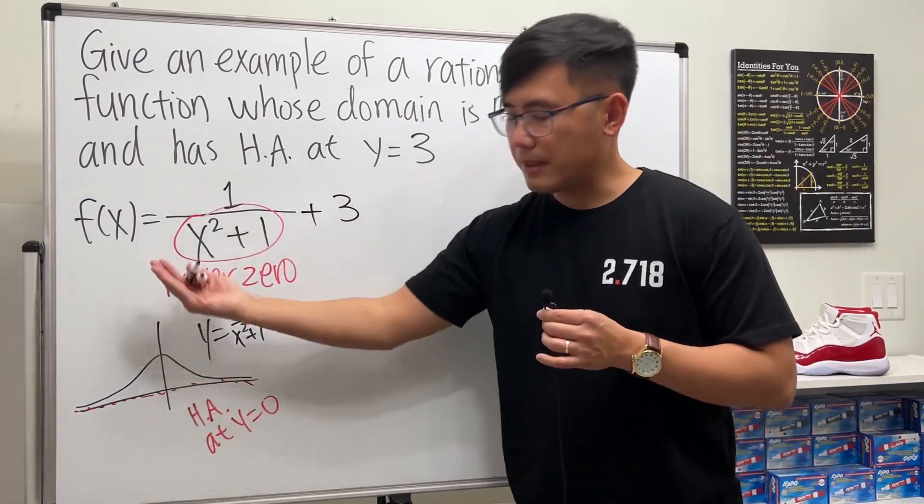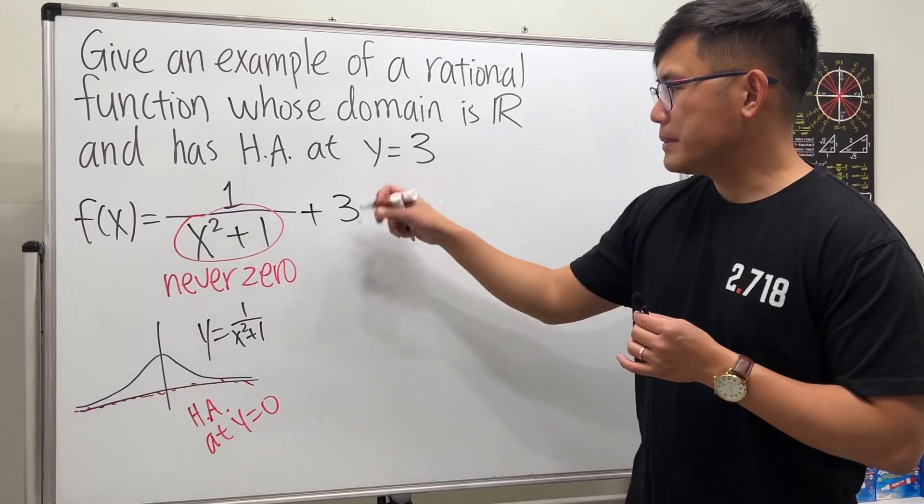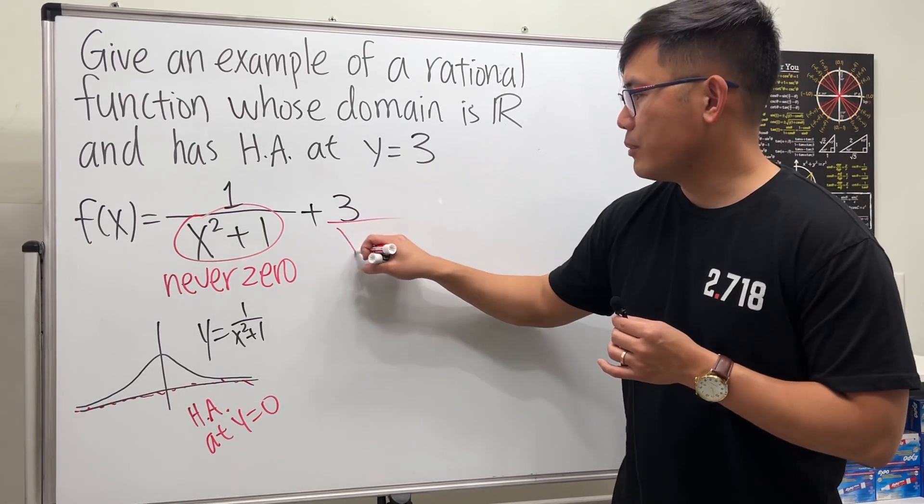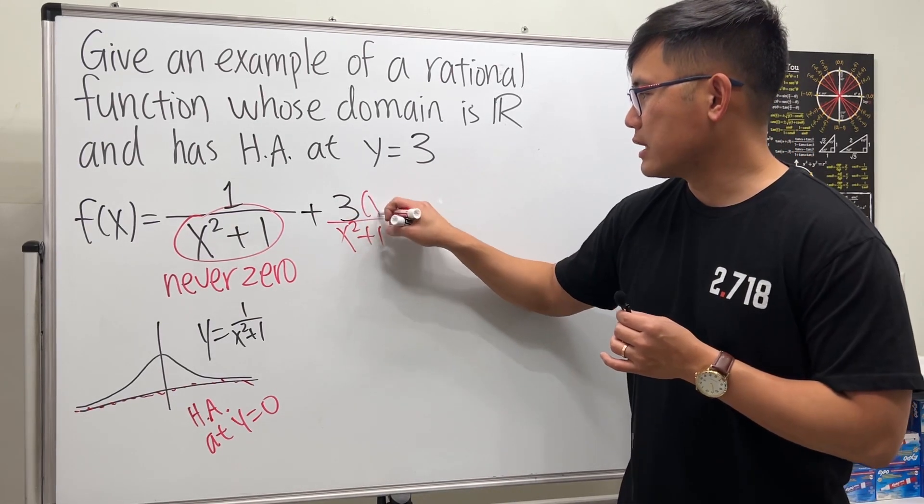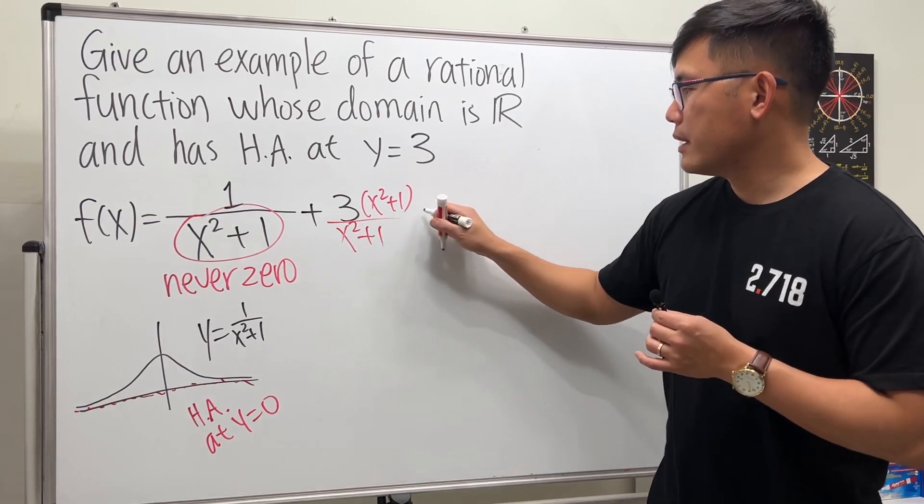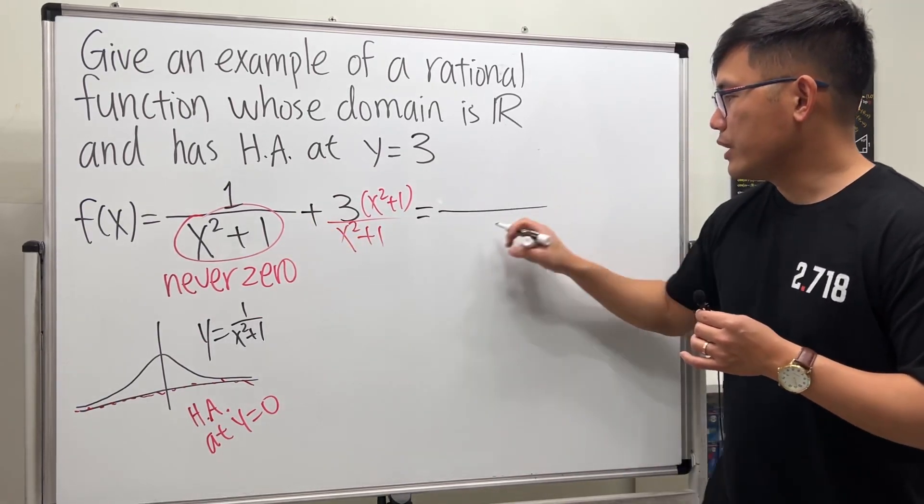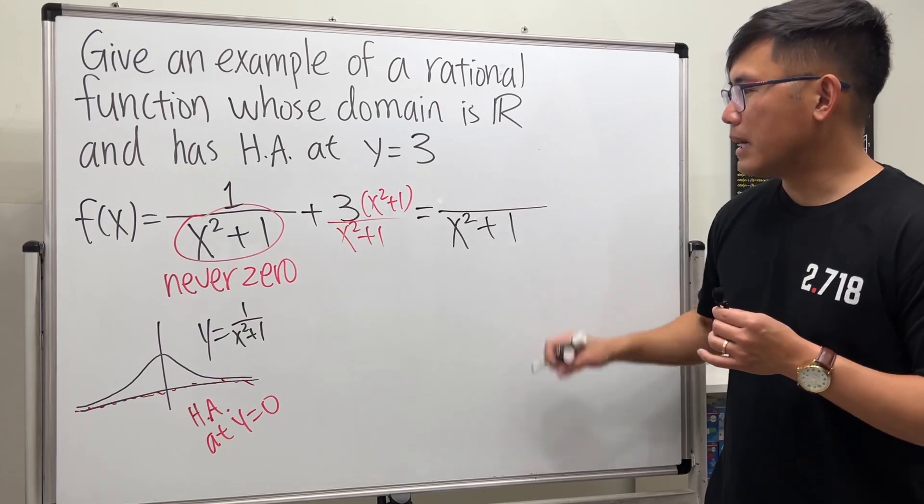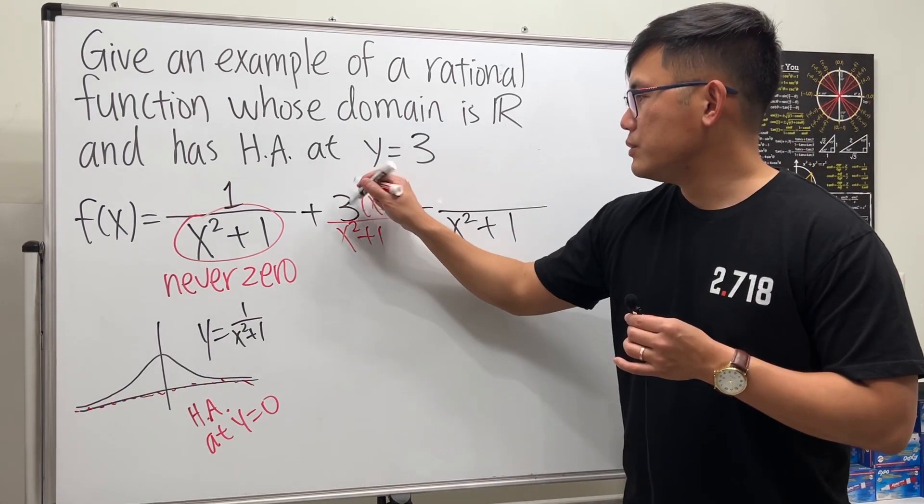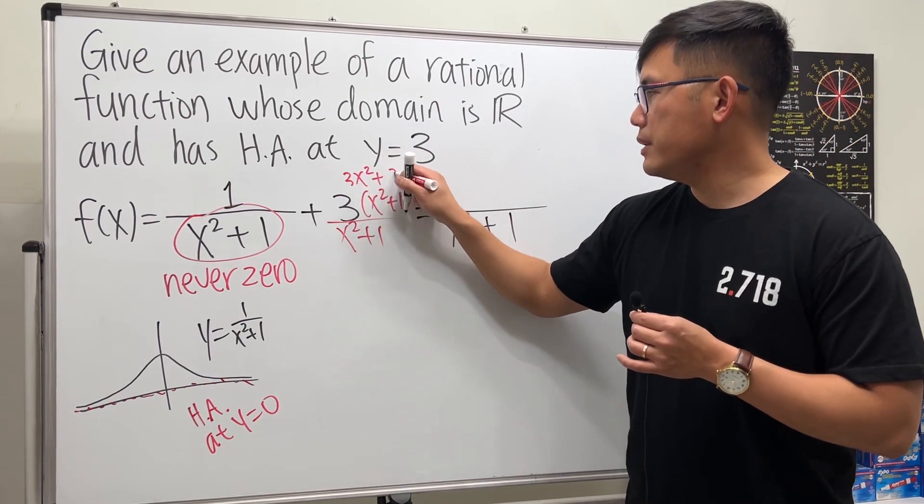I'm just going to use this and add 3 to it, then I can take the curve up three times, and then perhaps I'll combine like terms. Let me multiply x squared plus 1 on the bottom, also x squared plus 1 on the top.